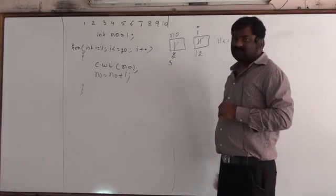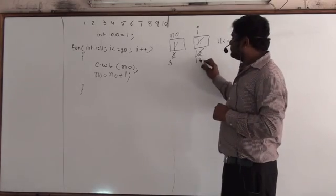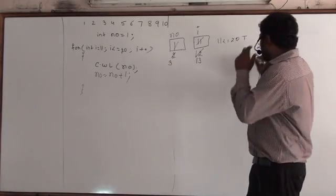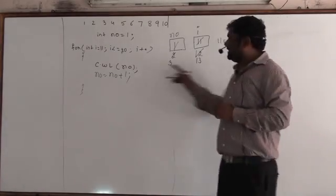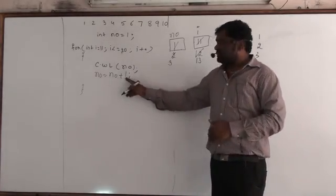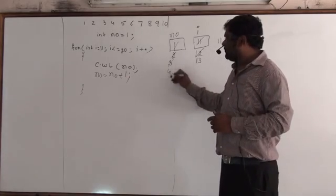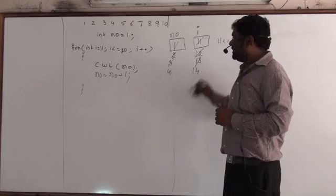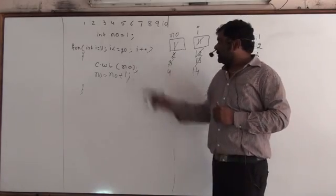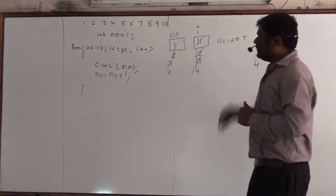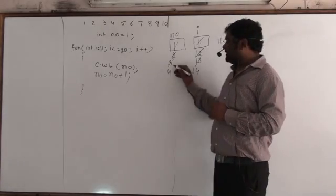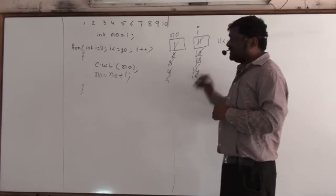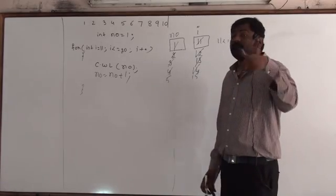i++, so i is 13. 13 less than or equals 20 — true. Print number: number is 3. Number equals number plus 1, so number is 4. i is now 14. 14 less than or equals 20 — true. Print 4. 4 plus 1, number is 5. i is 15. It means that 5 times I am rotating the loop — the initial value was 11, so we have rotated 5 times.